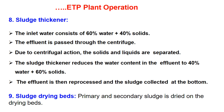Number eight is the sludge thickener. The inlet water consists of 60% water and 40% solids. The effluent is passed through the centrifuge — due to centrifugal action, solids and liquids are separated. The sludge thickener reduces the water content to 40% water and 60% solids. The effluent is then reprocessed and the sludge collected at the bottom. Finally, the primary and secondary sludge is dried on the sludge drying bed and taken away for further use.